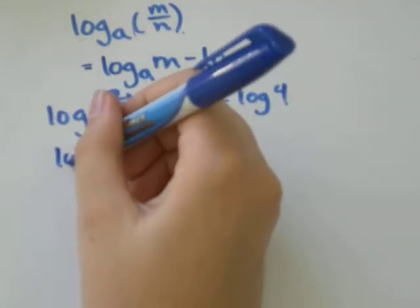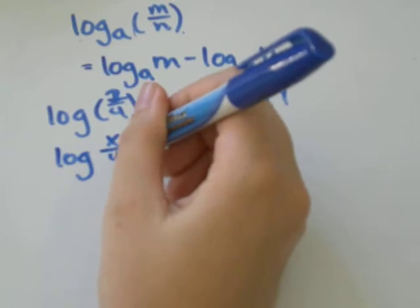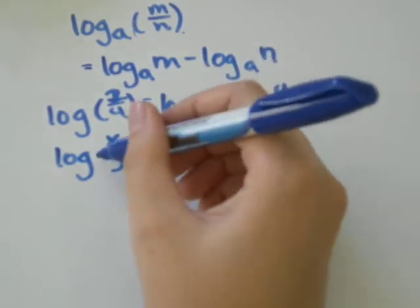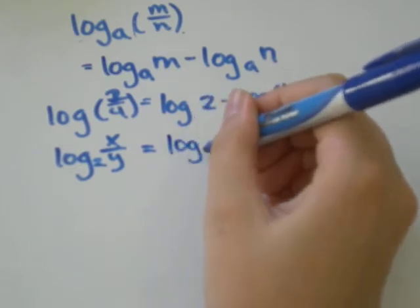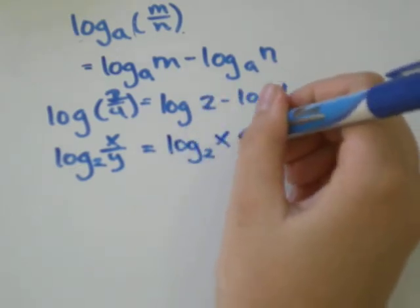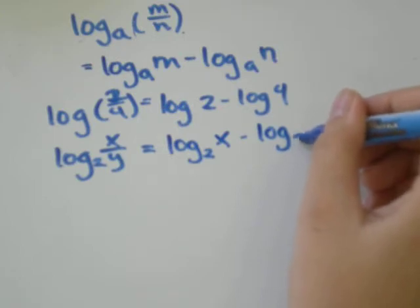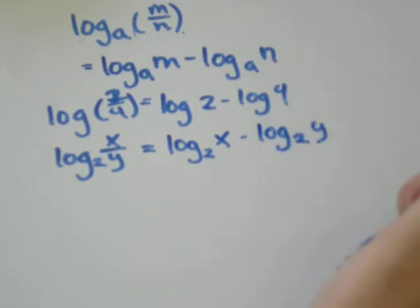If you have log of x over y, let's make it a base this time, let's say base 2. That would be log base 2 of x minus log base 2 of y.